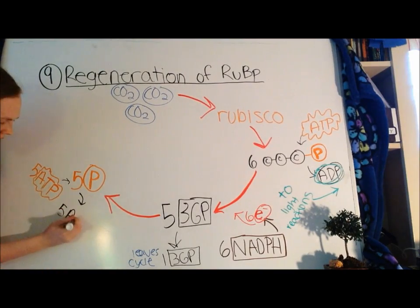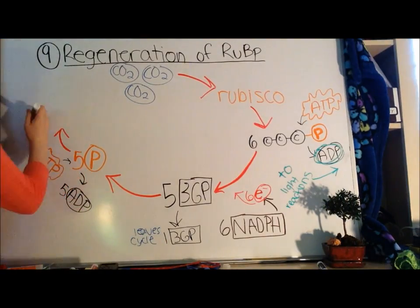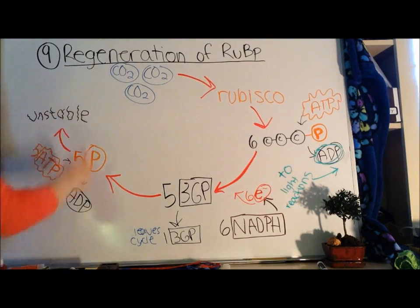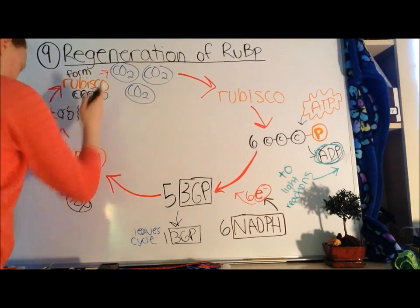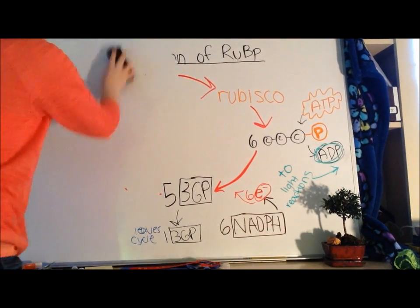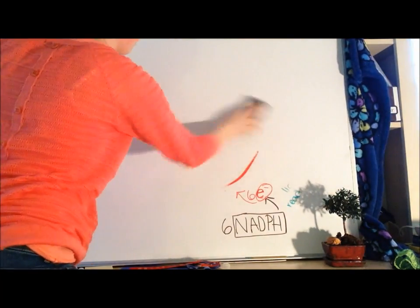This makes them unstable enough that they form five carbon molecules, each with a phosphate attached, a.k.a. RuBP. And there you have it folks, that completes photosynthesis.